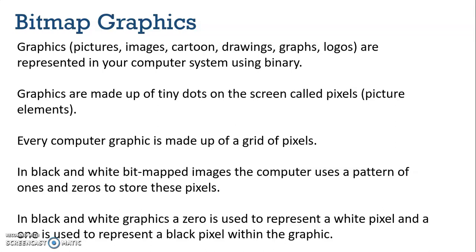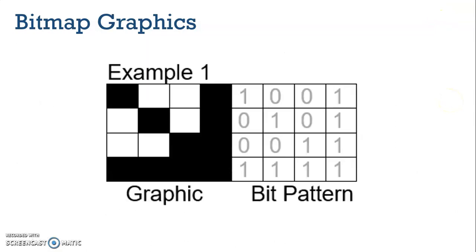Every computer graphic is made up of a grid of pixels. In black and white bitmap images, the computer uses a pattern of ones and zeros to store these pixels. A zero is used to represent a white pixel and a one is used to represent a black pixel. You can see here that the bit pattern on the right represents all of the black pixels with ones and all of the white pixels with zeros — that's how the computer stores these graphics.